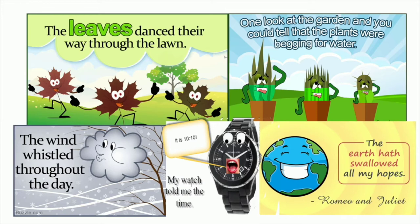The next example: one look at the garden and you could tell that the plants were begging for water. Well, plants don't beg — humans do. Next example, taken from Romeo and Juliet by Shakespeare: 'The earth hath swallowed all my hopes,' or in modern English, 'the earth has swallowed all my hopes.' Well, humans swallow, not the earth.